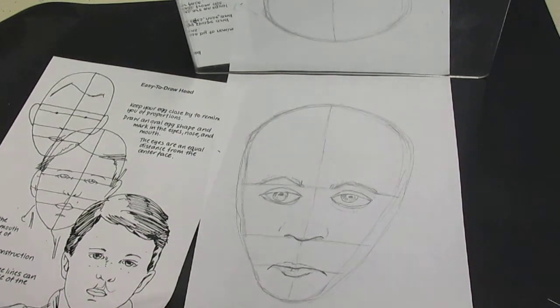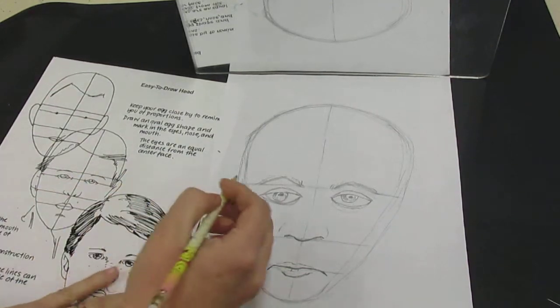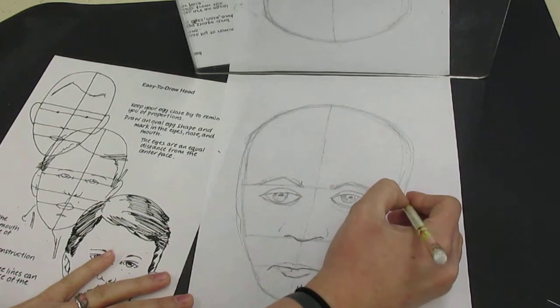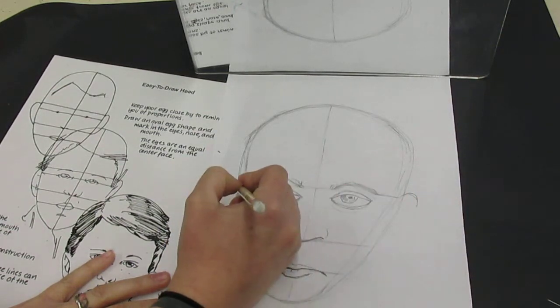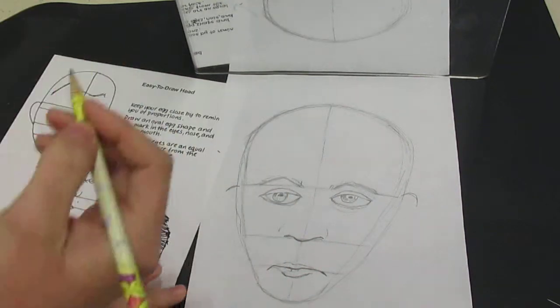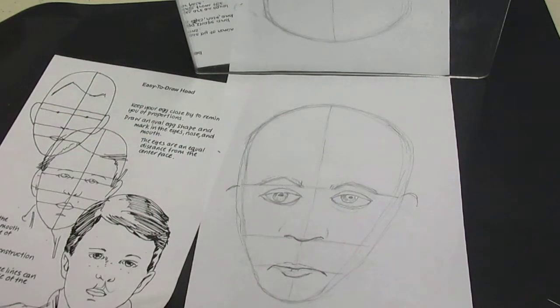Now we have our general facial features in here and we can give ourselves some ears next. What I'd like you to do is find your ears with your fingers and then walk your fingers towards your face. What you're going to find is the top of your ear should pretty much line up with your eyebrow in most cases. Again, everyone's body is a little bit different, it might not work all the time. These are just general guidelines.